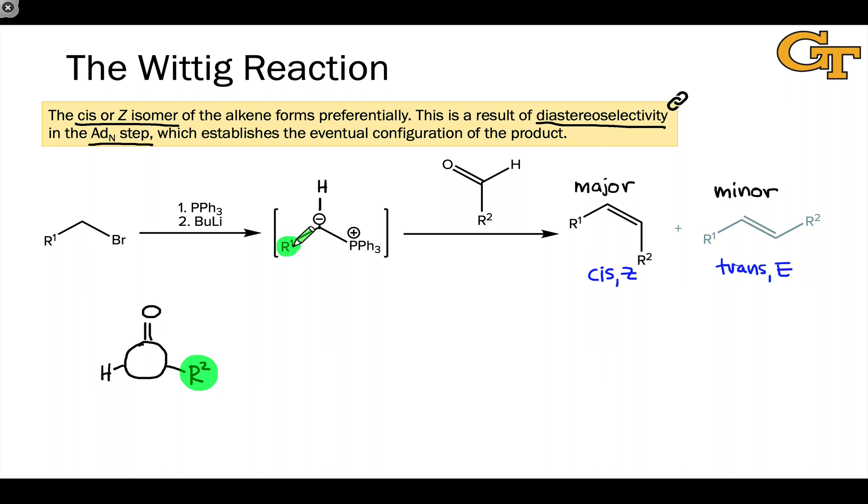The R1 group, pretty much regardless of what it is, is going to be much, much larger than hydrogen. Now let's think about what happens when the ylid approaches the carbonyl compound in an addition SN2 elementary step.